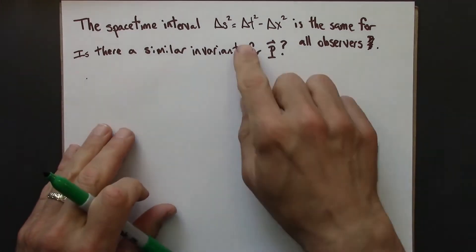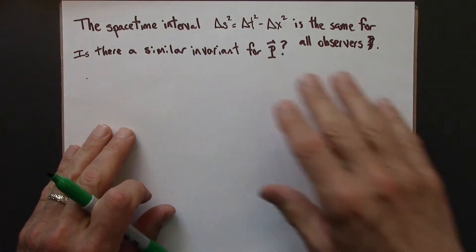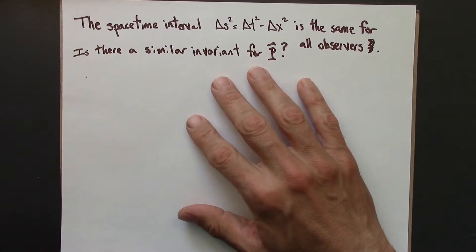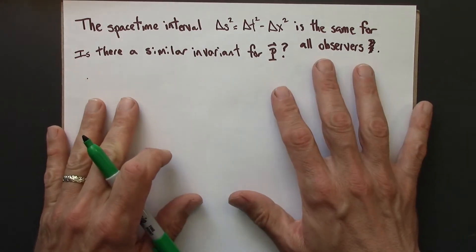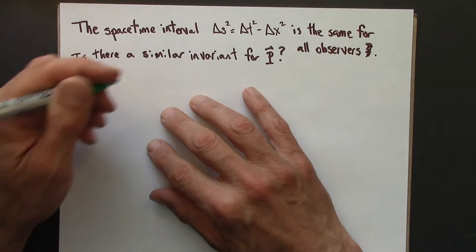And perhaps unsurprisingly, it has the same mathematical form. Unsurprising because really, the p-vector and our space-time coordinate vectors, they transform in the same way. So the answer to this question is going to be yes.